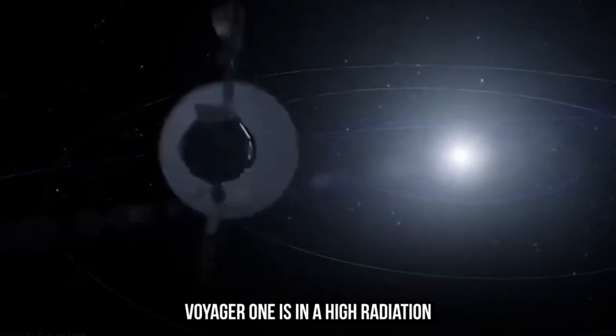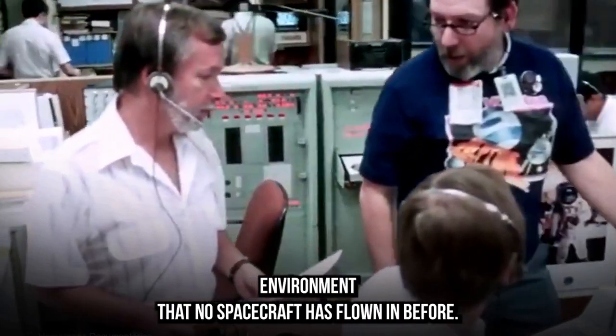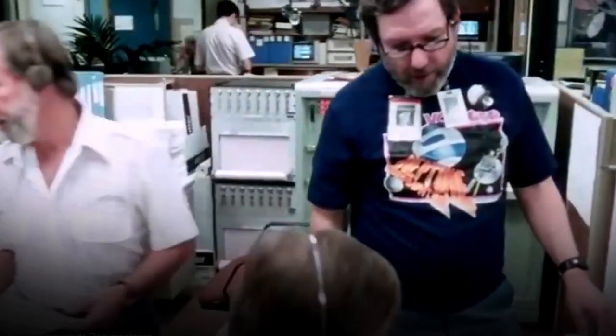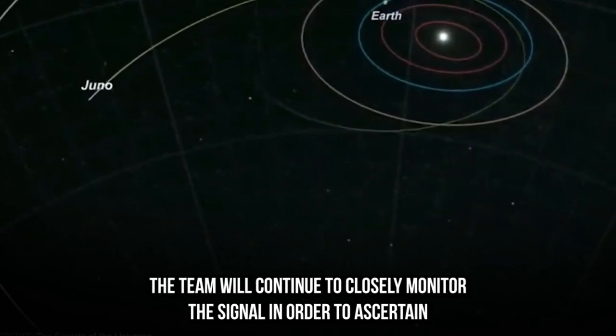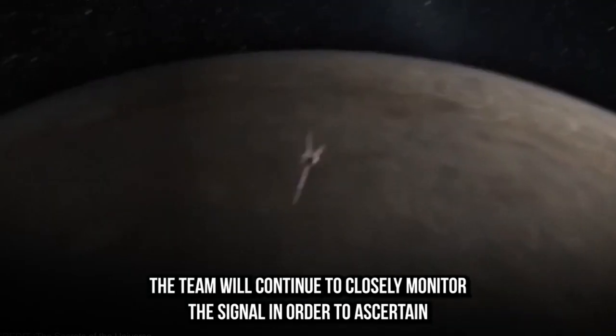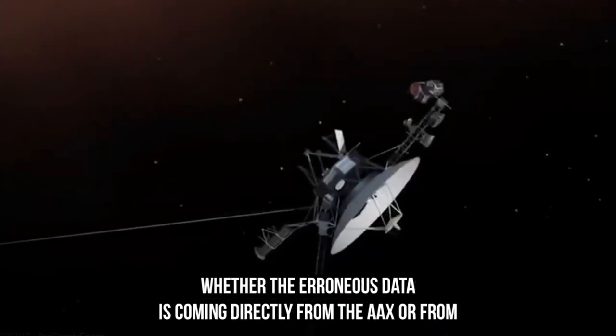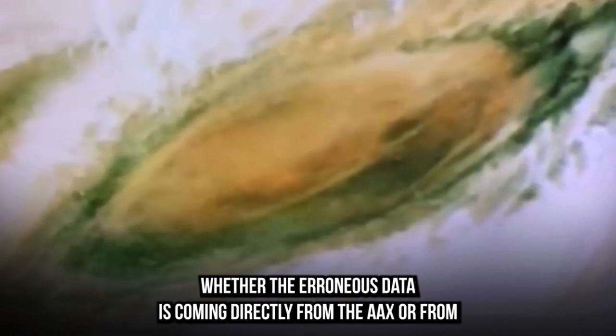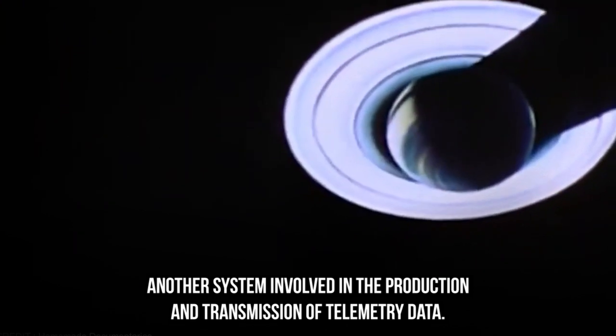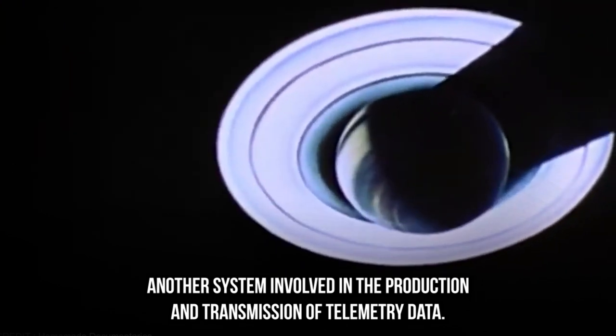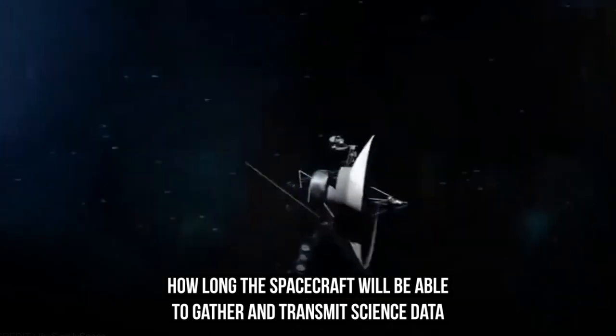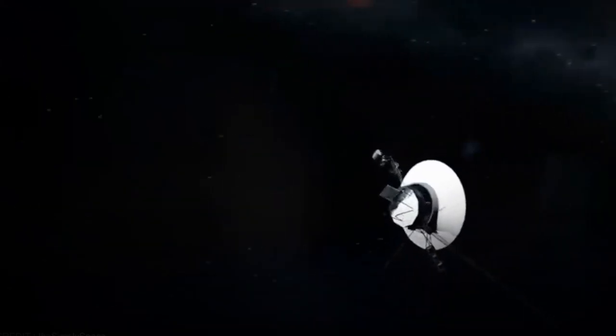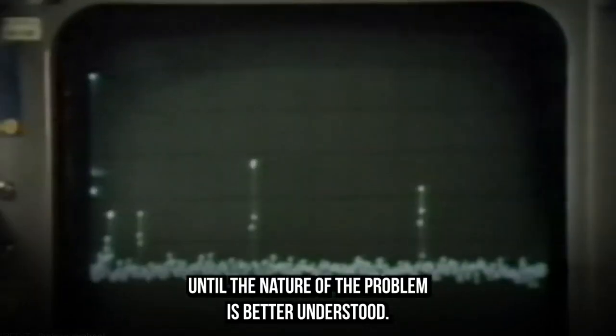Voyager 1 is in a high-radiation environment that no spacecraft has flown in before. The team will continue to closely monitor the signal to ascertain whether the erroneous data is coming directly from the AACS or from another system. The team cannot predict how long the spacecraft will be able to gather and transmit science data until the nature of the problem is better understood.